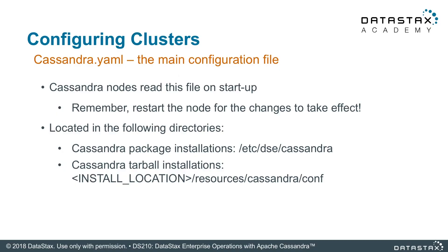Let's start with the basics of cluster configuration: the YAML file. The Cassandra YAML file is the main configuration file for Apache Cassandra and can be found either in /etc/dsc/cassandra if you used a package installer, or wherever you installed Cassandra — so cassandra/resources/cassandra/conf for a tarball installation. There are a bunch of things you can configure in that file and we'll be going over some of the key configuration options in the next few slides.